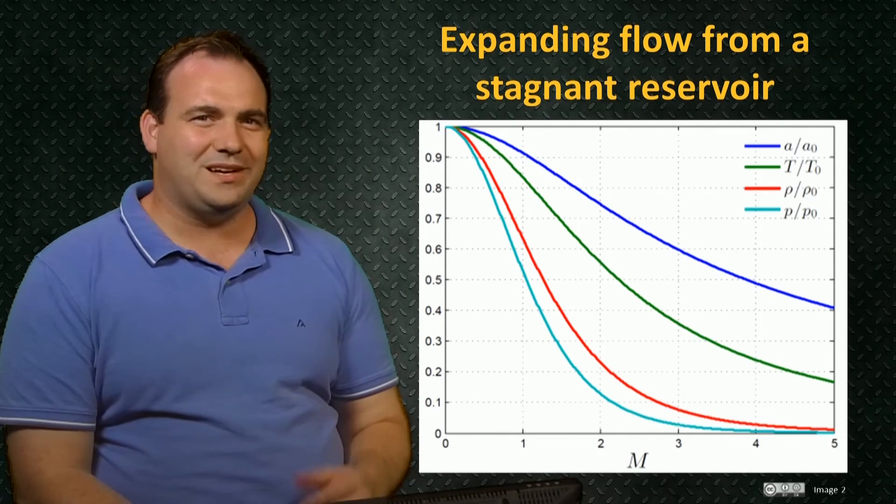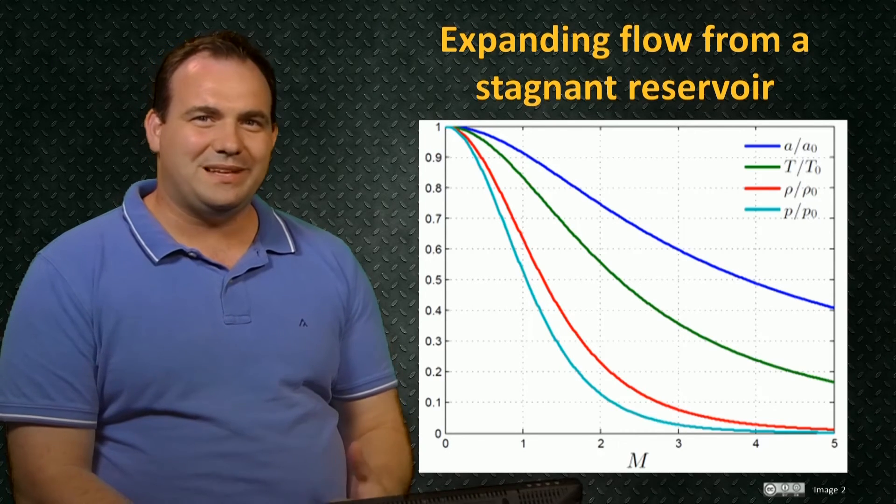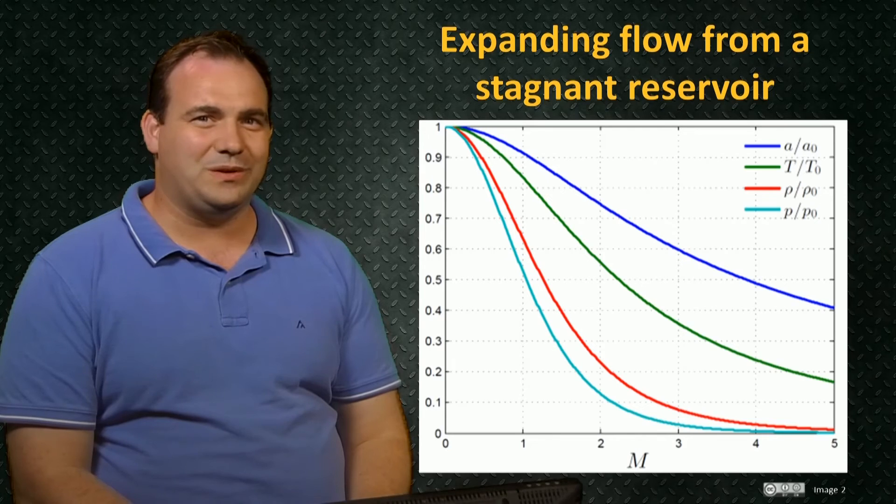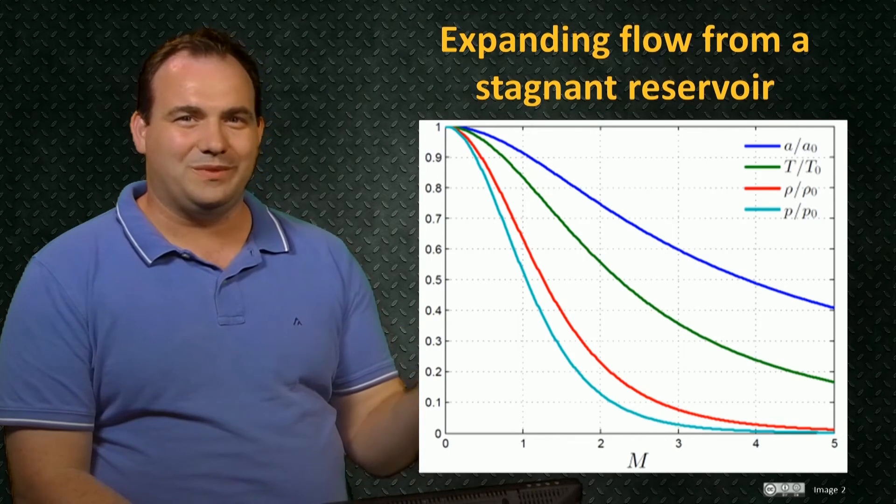We see that the pressure in light blue drops most rapidly, followed by the density in red and the temperature in green. Finally, the sound speed drops the least quickly.